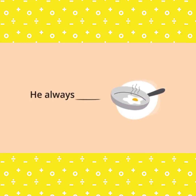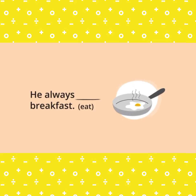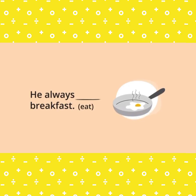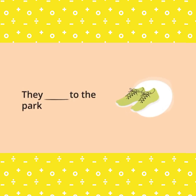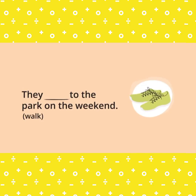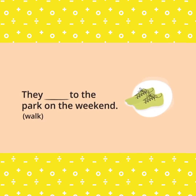Third example: He always ___ breakfast. The bracket gives 'eat.' Because the subject is 'he,' the answer is 'eats.' He always eats breakfast. Fourth example: They ___ to the park on the weekend. The bracket gives 'walk.' The answer is 'walk.' They walk to the park on the weekend.